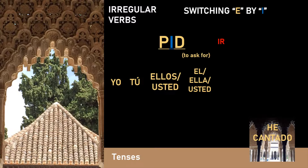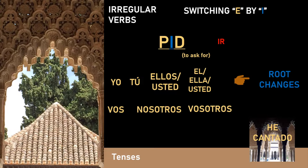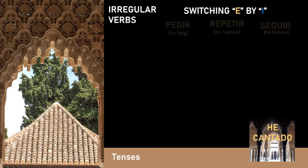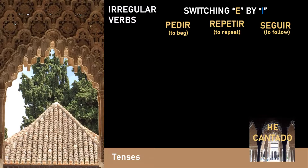That means that for the personal pronouns yo, tú, ellos, ustedes, él, ella, usted, the root changes. Whereas in the case of the personal pronouns vos, nosotros, vosotros, the roots remain unchanged. So the conjugation for pedir, repetir, and seguir is as follows.